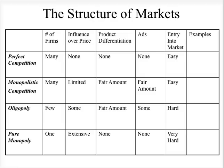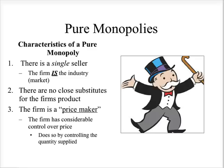The last market structure is a pure monopoly. In this one, only one firm exists. They have complete control over the price. There's zero product differentiation because it's only one firm, so they don't have to differentiate. No advertising because they are the whole market, and it's very, very hard to enter into a monopolistic market structure. Pure monopolies have a single seller, there are no close substitutes, and the firm is the price maker — they control the quantity supplied because demand remains the same.